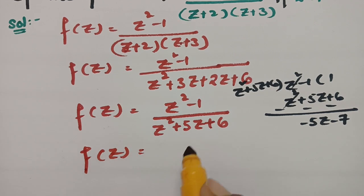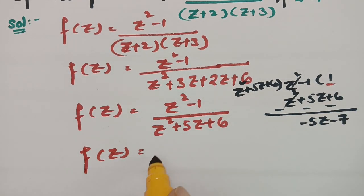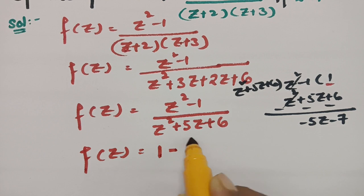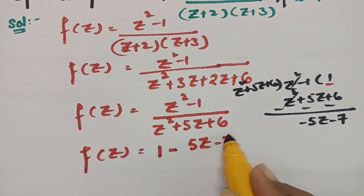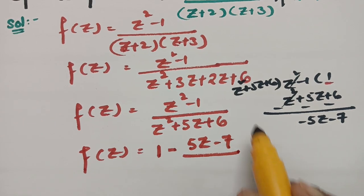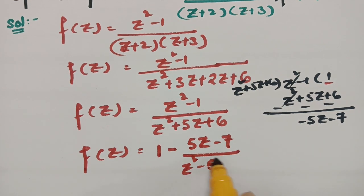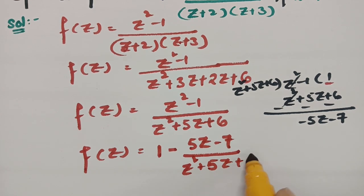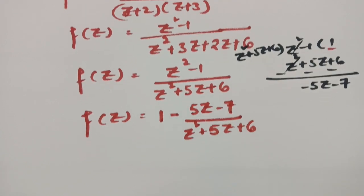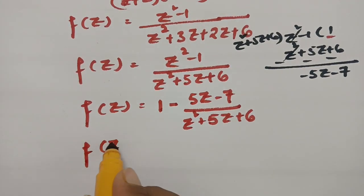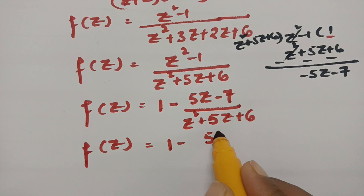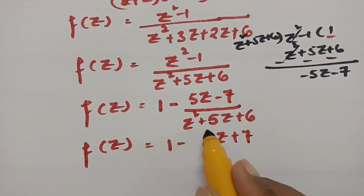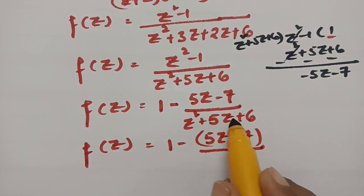Therefore f(z) can be written as 1 minus (5z + 7) / (z² + 5z + 6). This can be further written as f(z) = 1 minus (5z + 7) / [(z + 2)(z + 3)], and now we can resolve this into partial fractions.